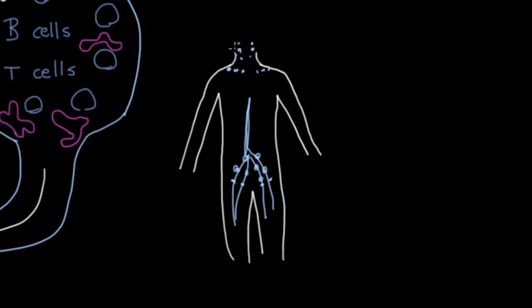So all those are along lymph vessels that are coming down. And then the lymph vessels that are coming here from your arms, those will have lymph nodes along them.